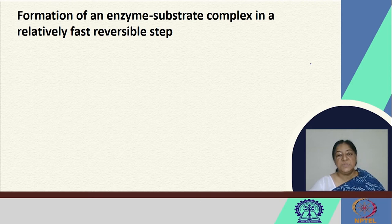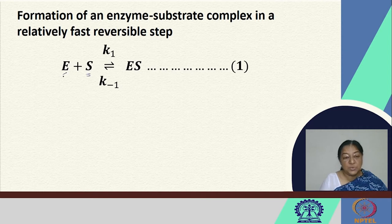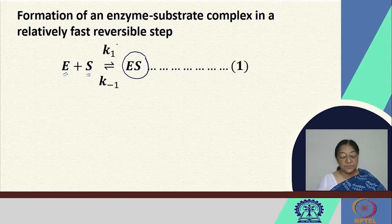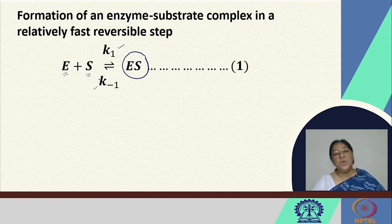The formation of the enzyme-substrate complex occurs in a relatively fast reversible step. In this first reaction, the substrate forms a complex with the enzyme with a forward rate constant K1 and a reverse rate constant K-1. This is similar to the protein-ligand binding studies considered previously, where a ligand binds to a protein with a forward rate constant and a reverse rate constant, the latter corresponding to dissociation of the enzyme-substrate complex.